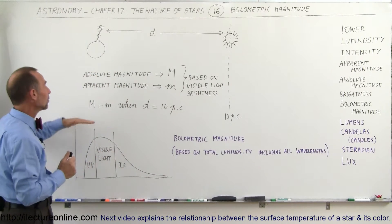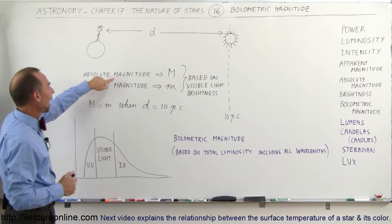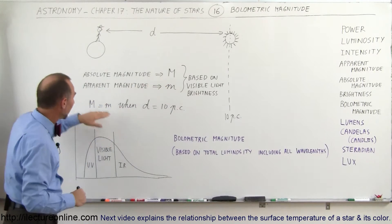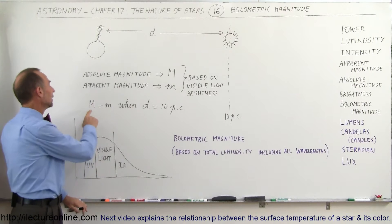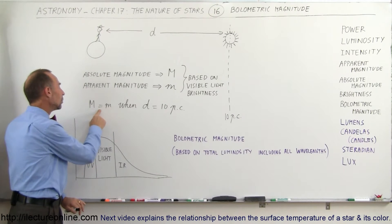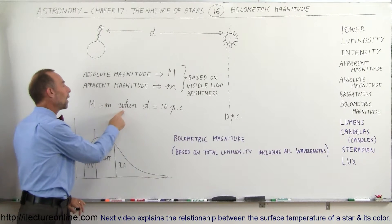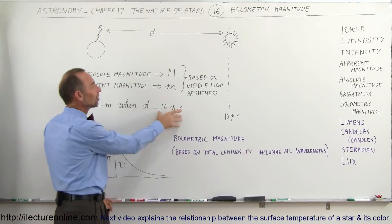Apparent magnitude is, of course, how bright a star or a galaxy appears to be from our vantage point from the Earth. And absolute magnitude is equal to the brightness or the magnitude or the apparent brightness of a star when it's located at 10 parsec.